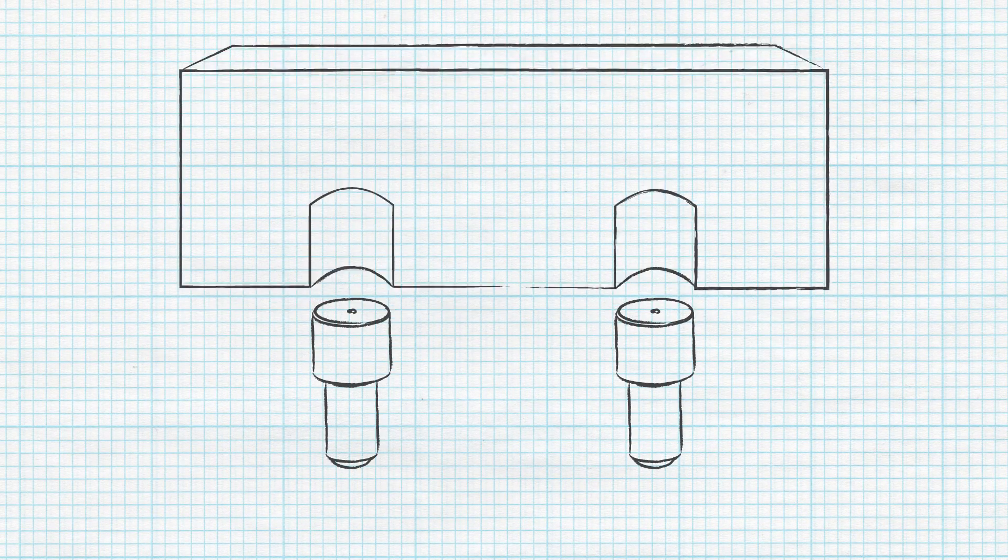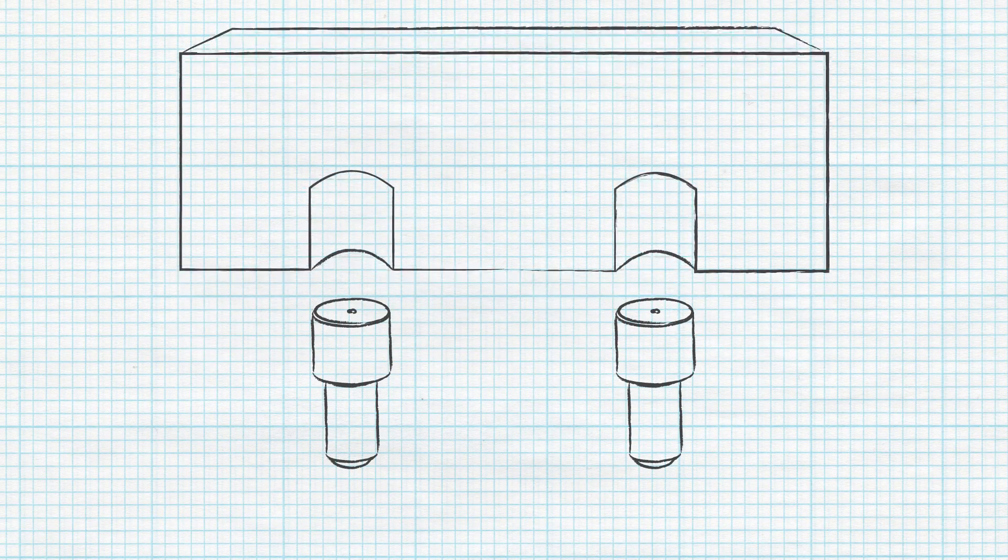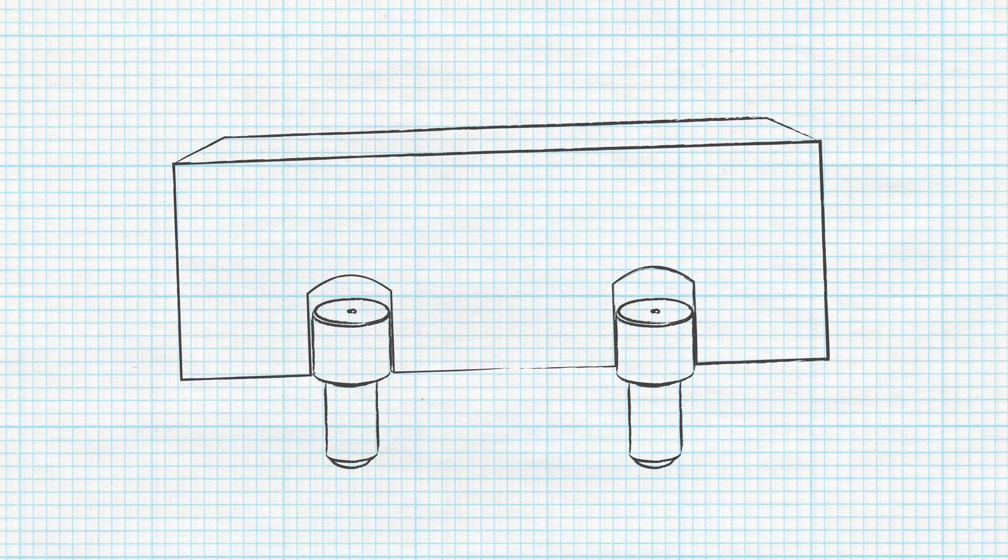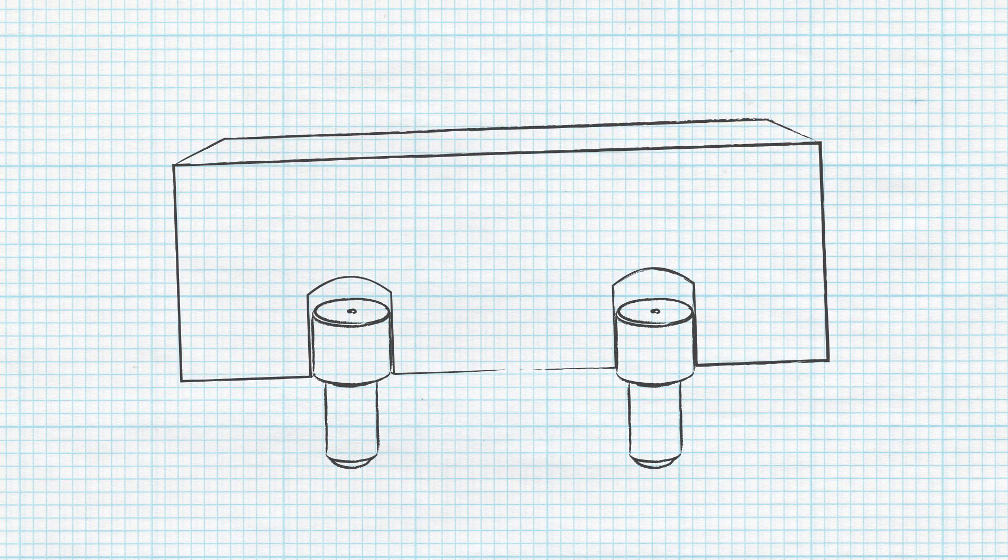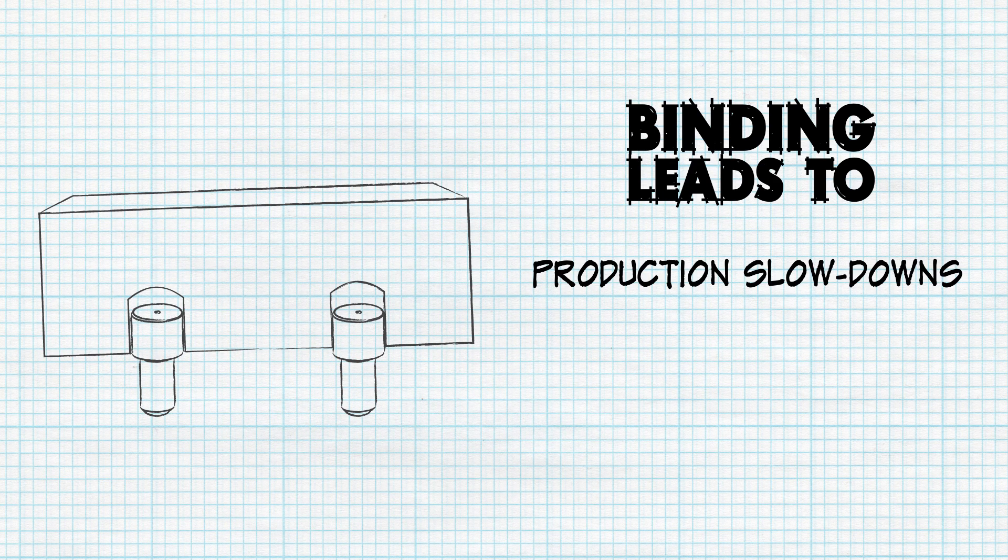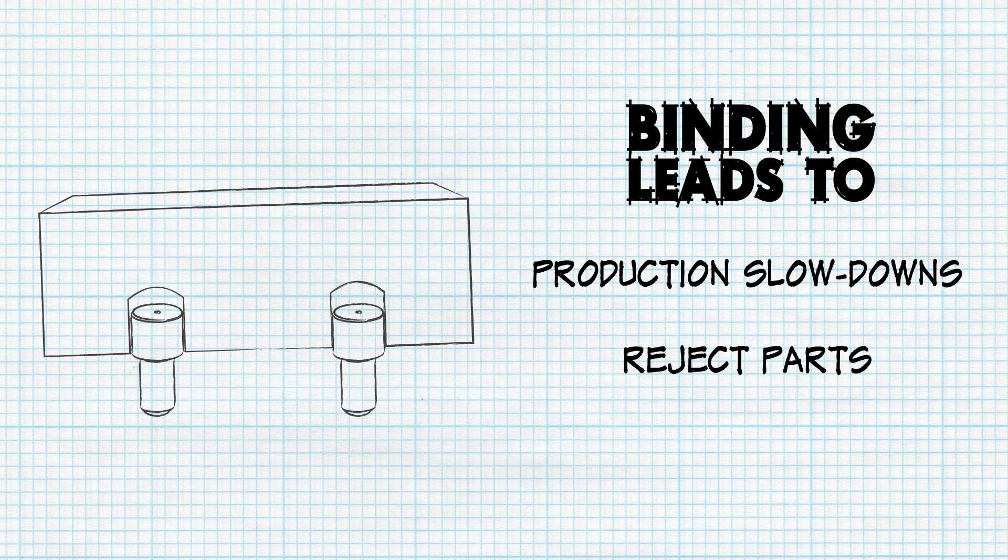One of the biggest issues a new fixture designer encounters is binding of a part, where the way it is placed or removed from a pair of locating pins causes it to become stuck and out of alignment. This can lead to production line slowdowns, or in worse cases, reject parts due to improperly assembled or machined components.